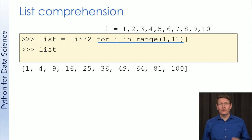Next, let's focus on the first part of the statement. i star star 2 means i squared. So we're saying we want i squared for each of the values of i, which we know will be 1 through 10. The result is a list with all the squares from 1 through 10, just like we wanted.